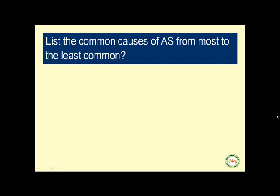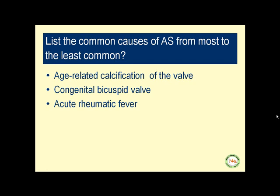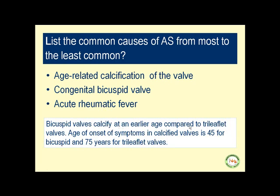The common causes of aortic stenosis from most to least common are: age-related calcification of the valve, congenital bicuspid aortic valve, and acute rheumatic fever. Note that acute rheumatic fever used to be the number one cause before antibiotics were invented. Bicuspid valves calcify at an earlier age compared to trileaflet valves — age of onset of symptoms is about 45 years for bicuspid valves and 75 for trileaflet or normal valves.